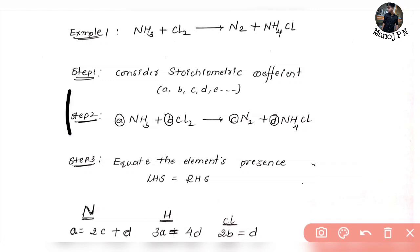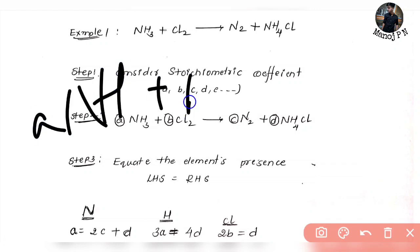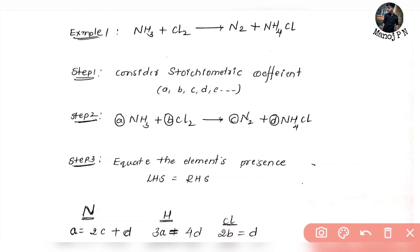So NH3 is A, Cl2 is B, and on the right side N2 is C, and NH4Cl — ammonium chloride — is D. So what is A, B, C, D? That is the foundation of this method.